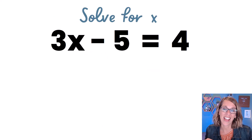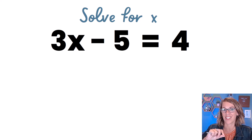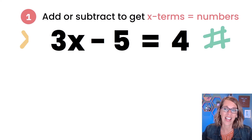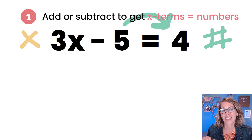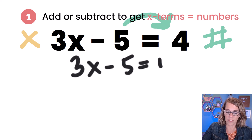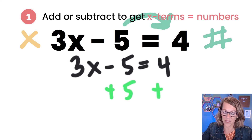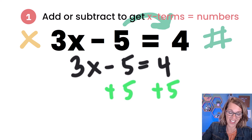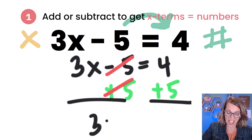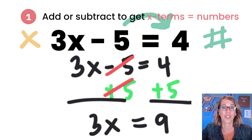Here comes our next one. I again want to get x all by itself, starting with getting the x terms on one side and the numbers on the other — that is our step number one. The 3x is again on the left, so let's go ahead and put numbers on the right-hand side and x terms on the left. That means that just that 5 needs to move to the other side. So I've got 3x minus 5 is equal to 4. I want to add that 5 to undo it and move it to the other side, so plus 5 on both sides. Negative 5 plus 5 is equal to 0, so that's no longer on the left, and I only have the 3x on the left. On the other side, I've got 4 plus 5, which is equal to 9.